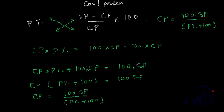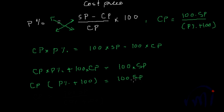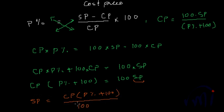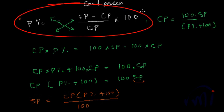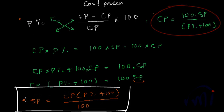If we are provided with cost price and profit percentage and asked to find the sale price, the derivation is straightforward. From the same equation: SP = CP × (P% + 100) / 100. So this is the formula to find sale price, where P is the profit percentage and CP is the cost price.